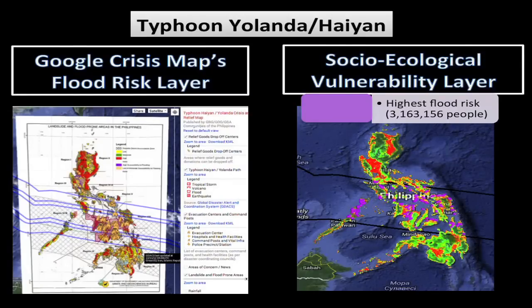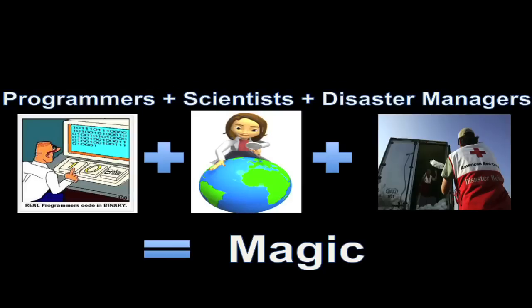We can count how many people live there, have that interact with precipitation data, and really leverage the power of science. So I think programmers, scientists, and disaster managers can all come together to build more accurate risk prediction tools, at the spatial and temporal scale that we need it, to make decisions on time.